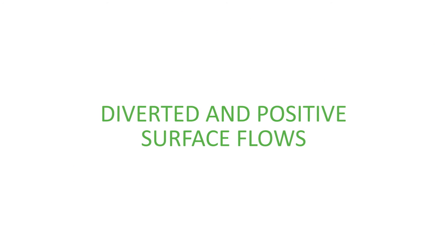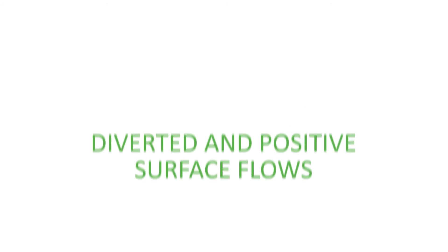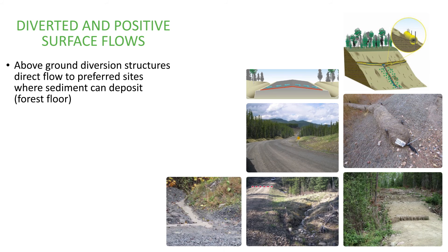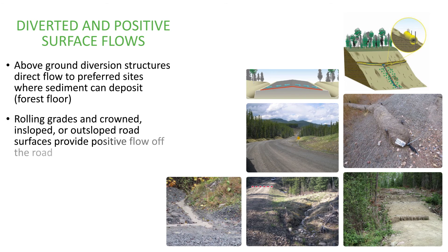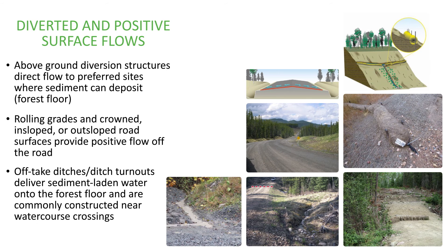Diverted and positive surface flows. Above-ground diversion structures direct flow to preferred sites where sediment can deposit, such as the forest floor. Rolling grades and crowned, in-sloped, or out-sloped road surfaces provide positive flow off the road. Off-take ditches or ditch turnouts deliver sediment-laden water onto the forest floor and are commonly constructed near watercourse crossings.